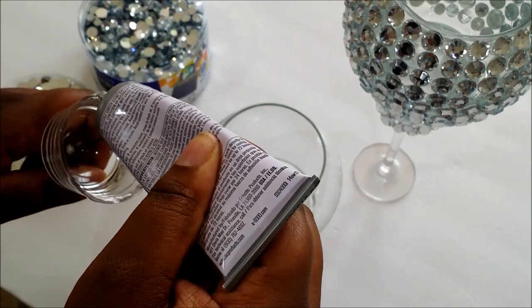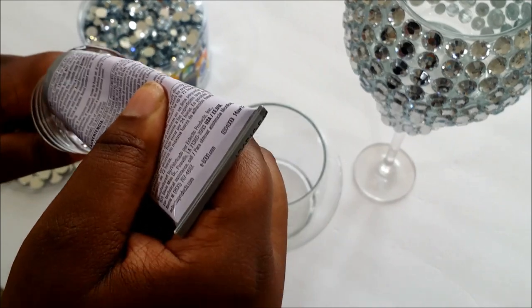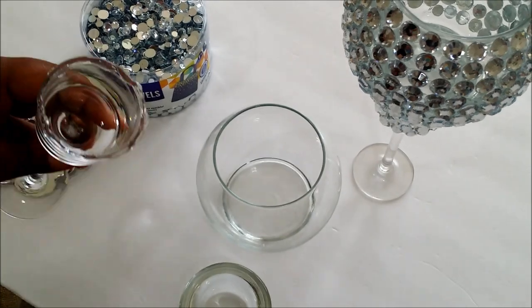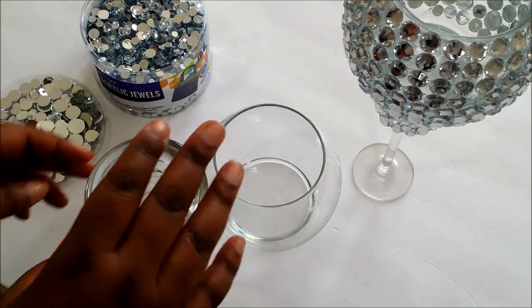Because we want the glue to be nice and thick all the way around the glass. Even if a little bit falls off into the inside, don't worry about it. It's going to be covered by the jewels so no one's going to see it.